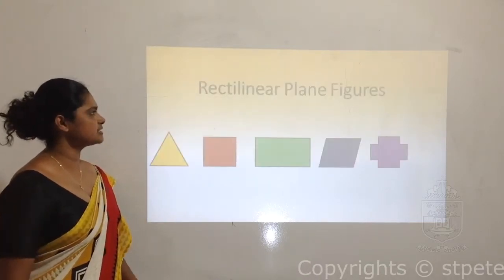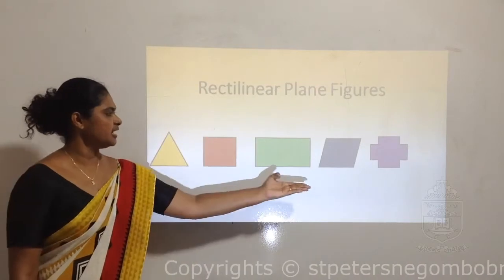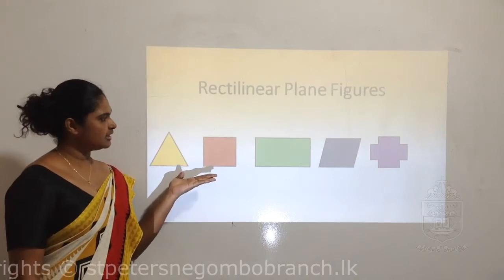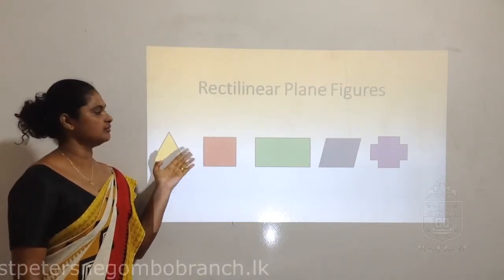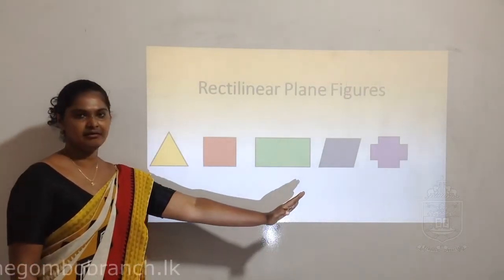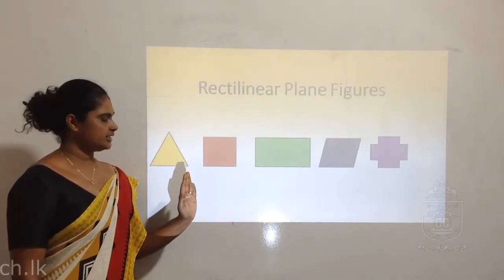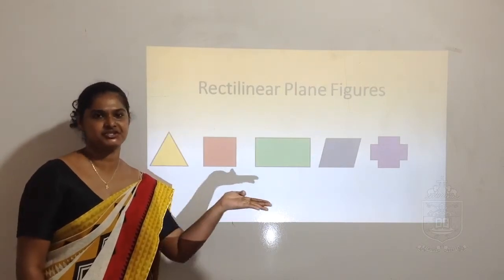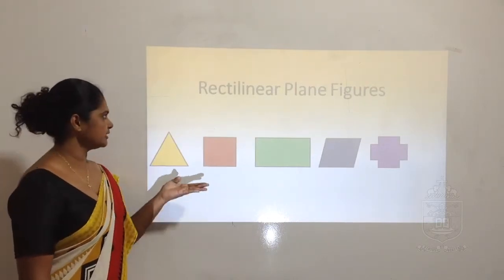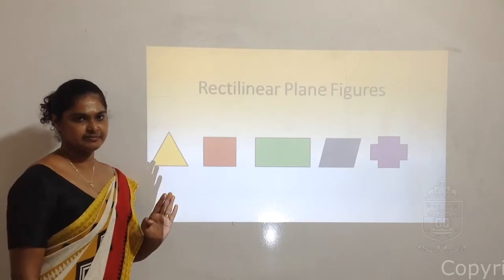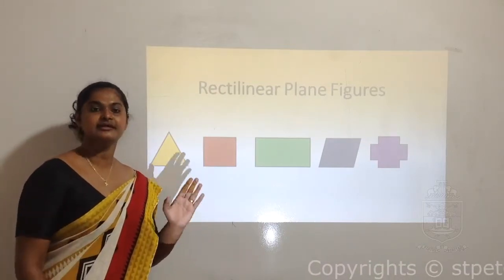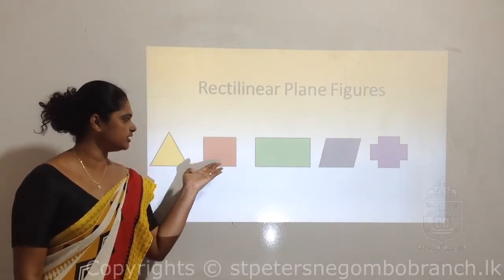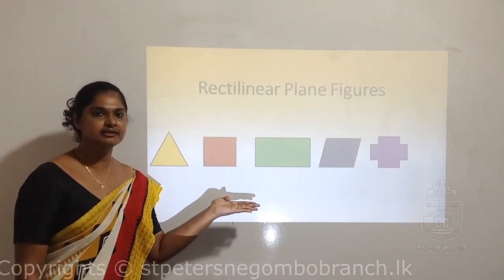Now we will see what are rectilinear plane figures. I have attached here various kinds of figures. Some of the shapes are well known to you. Normally plane figures, when you are in primary grade, you call them as shapes. Rectilinear plane figures are closed plane figures made only with straight line segments. Can you see any of these figures made with a curved line? No.